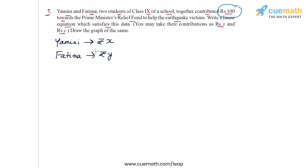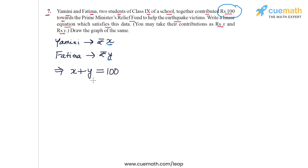We don't know how much they individually contributed, but we do know that together they contributed rupees 100. So the sum of X and Y should be 100, and this is how we obtain an equation in X and Y: X plus Y equals 100. This is the linear equation which satisfies the data.